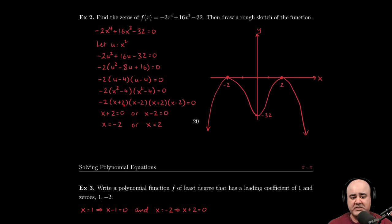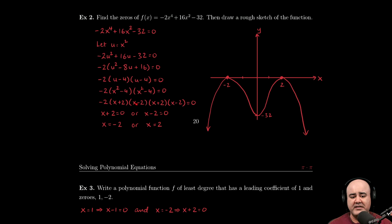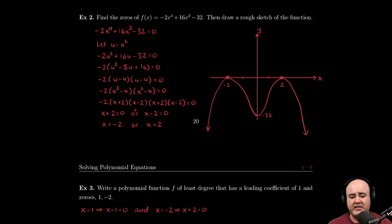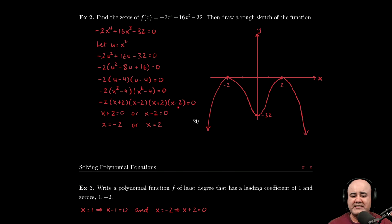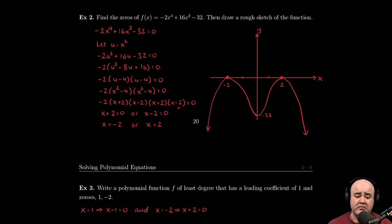We can either set x plus two equal to zero, or we can set x minus two equal to zero. Either this could be zero, or this could be zero, or both of these could be zero. And because these are repeats of these two roots, or these two factors, we don't have to address these again.